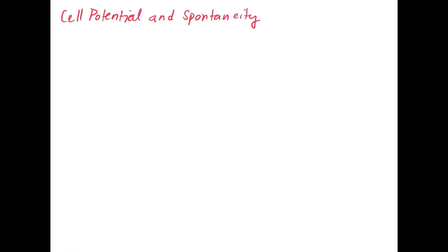In this video, we're going to look at how the calculated cell potential relates to the spontaneity of the reaction in an electrochemical cell. In the last video, we learned how to calculate cell potentials, and we saw that E-cell equals E of the cathode minus E of the anode. We learned that standard reduction potentials that are more positive will favor reduction — that'll be the cathode.